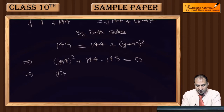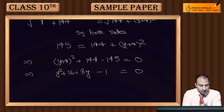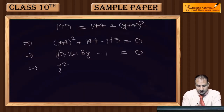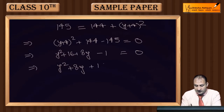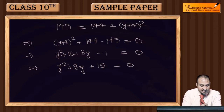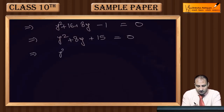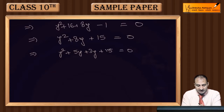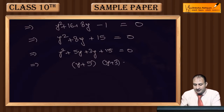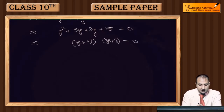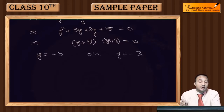Ise aur calculate karte hain: y² + 8y + 16 − 1 = 0, jo simplify hoke y² + 8y + 15 = 0 ho jaata hai. 15 ke factors 5 aur 3 lete hain jinka sum 8 hai, toh (y+5)(y+3) = 0. Therefore y = −5 ya y = −3.